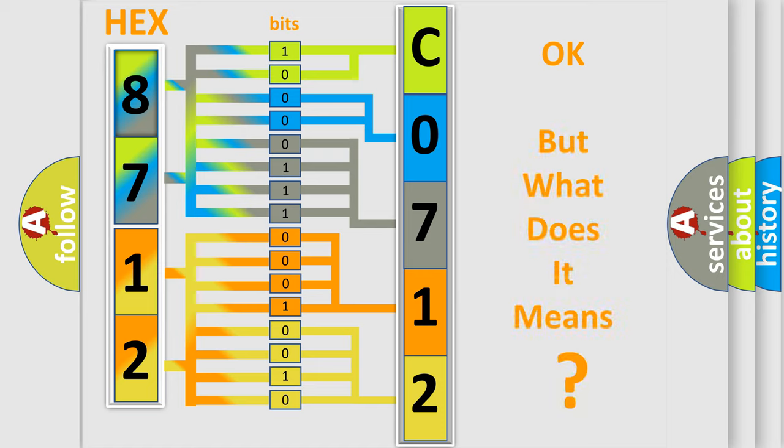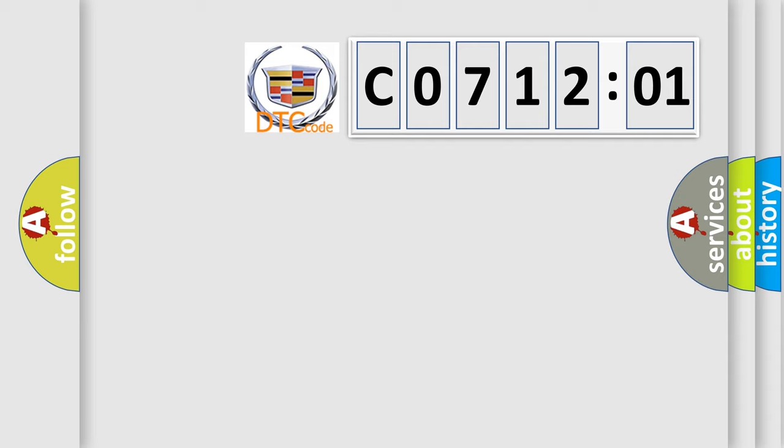We now know in what way the diagnostic tool translates the received information into a more comprehensible format. The number itself does not make sense to us if we cannot assign information about what it actually expresses. So, what does the diagnostic trouble code CO71201 interpret specifically for Cadillac car manufacturers?